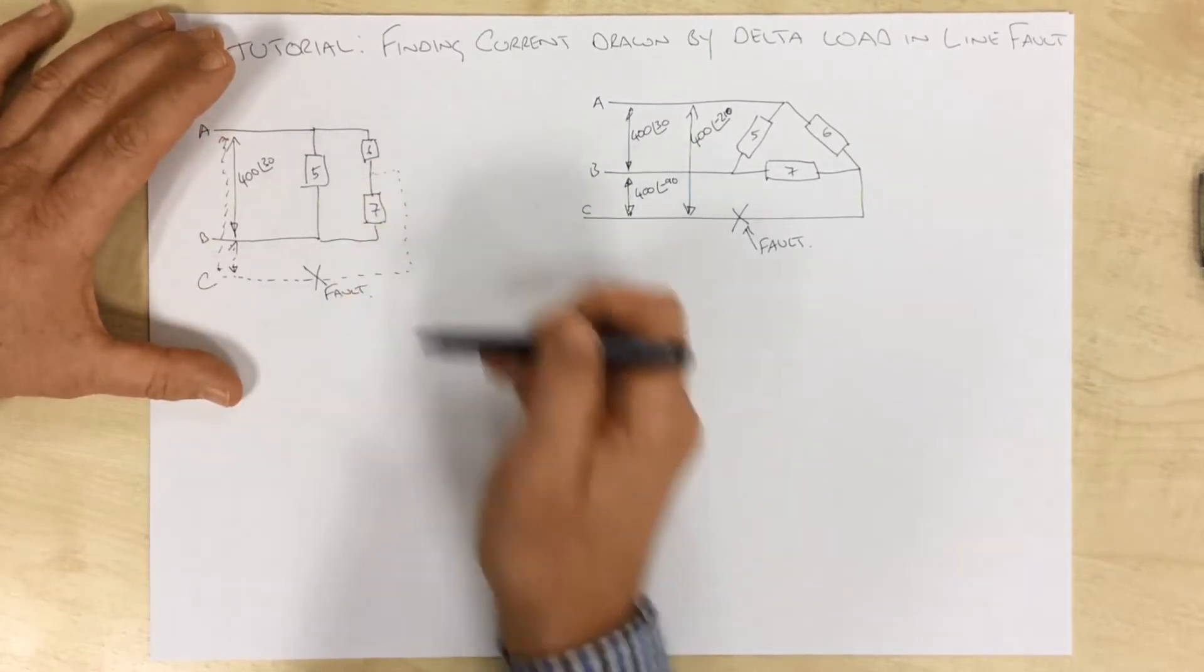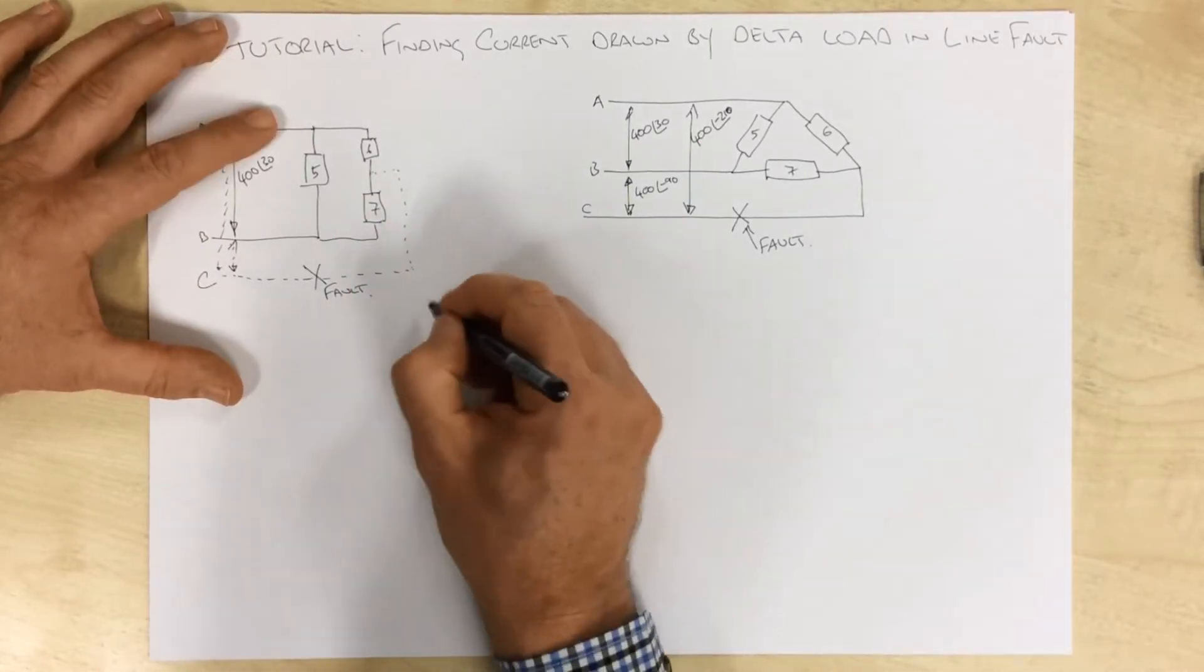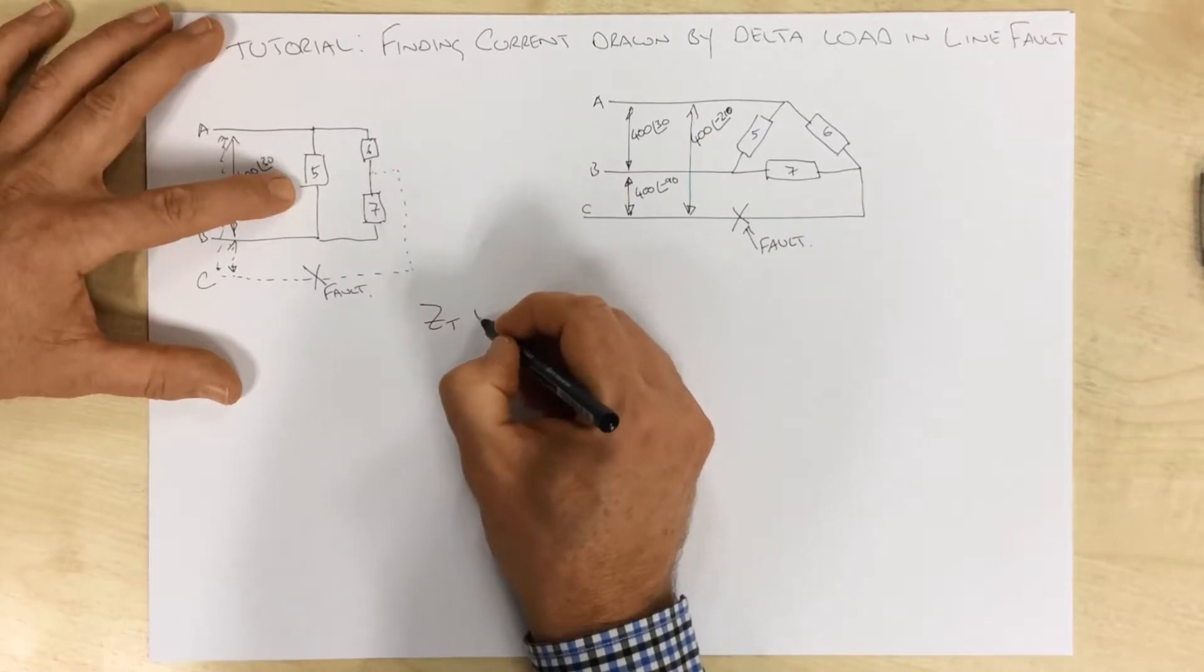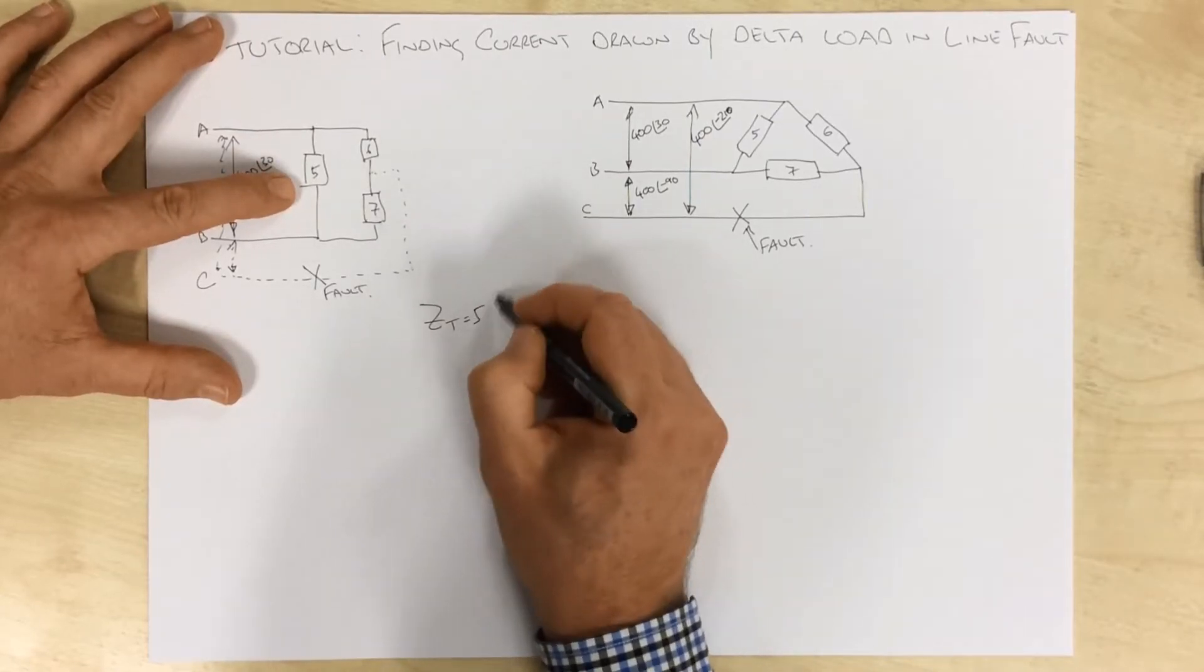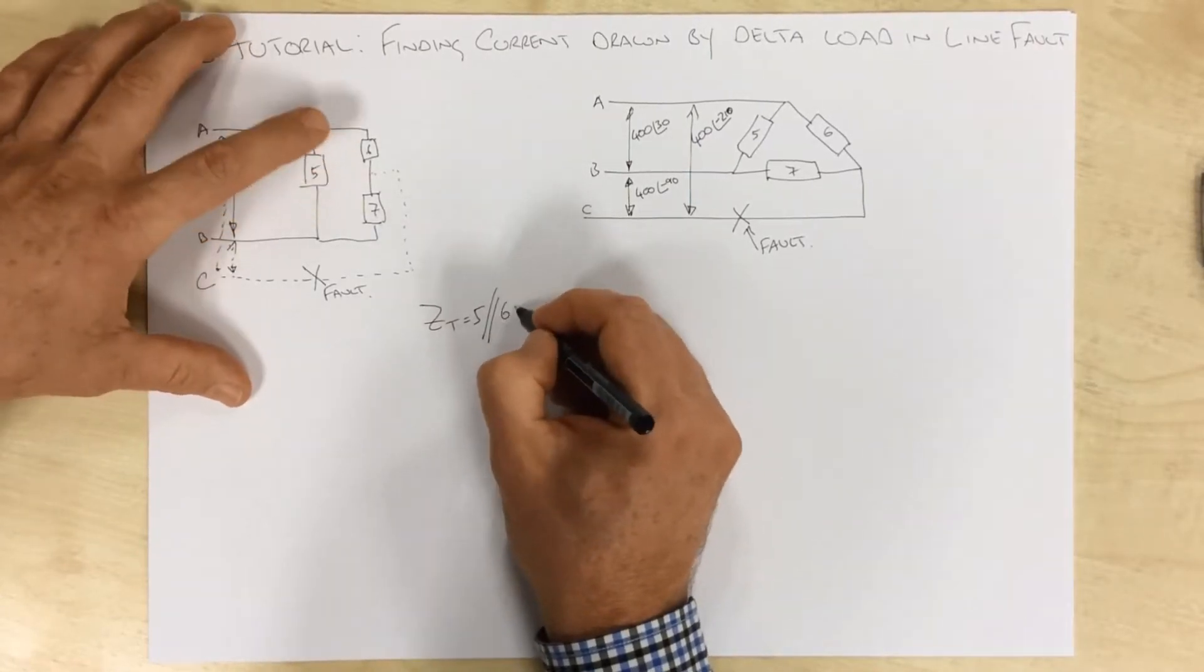But to find the total current, we need to find the total impedance, and the total impedance here is quite simply 5 ohms in parallel with 6 and 7.